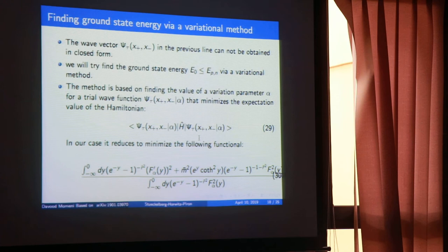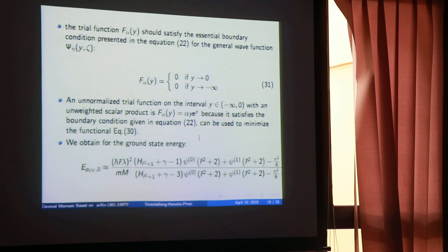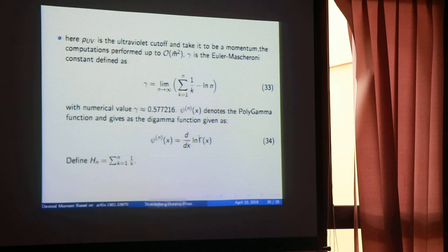The ground state energy for this system can be defined by the variational method. By making the minimization over a suitable class of trial functions of the energy functional, you can find the energy. By choosing a very good trial wave function, you can estimate the ground state energy. This gives a complicated form of the ground state energy, as several mathematical constants appear, like the Euler-Mascheroni constant.